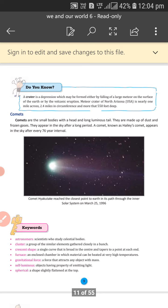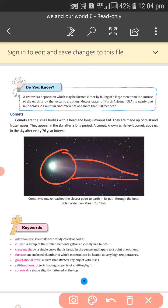Comets. What are comets? Comets are small bodies with a head and long luminous tail. They are made up of dust and frozen gases. They appear in the sky after a long period. A comet known as Halley's comet appears in the sky every 76 years.